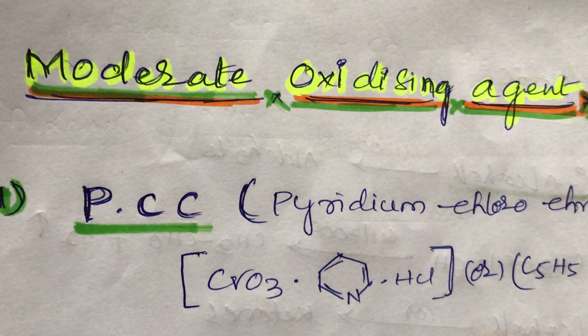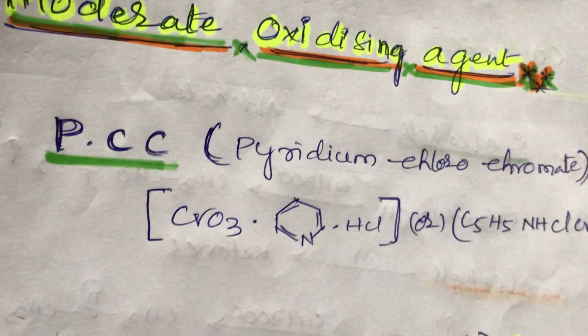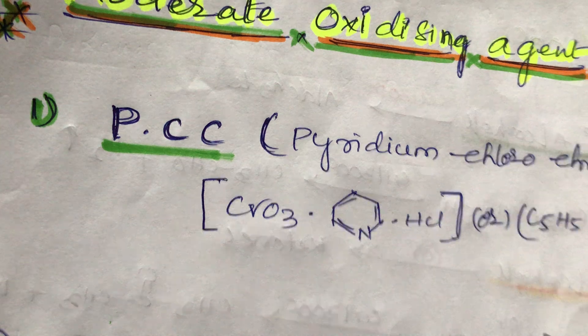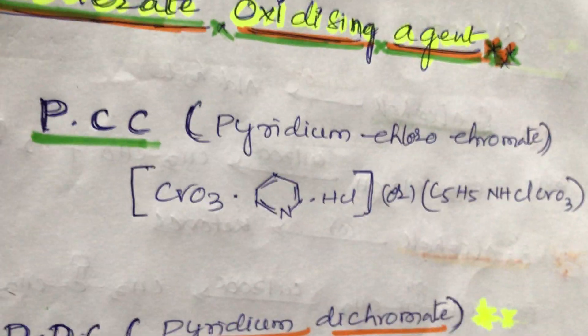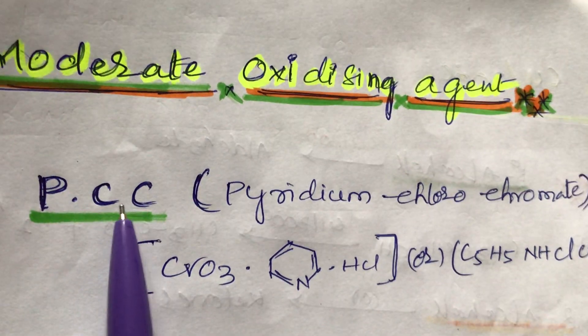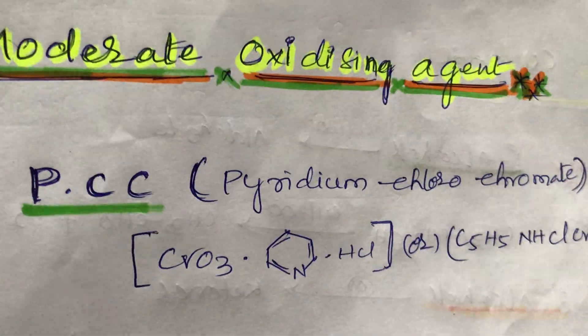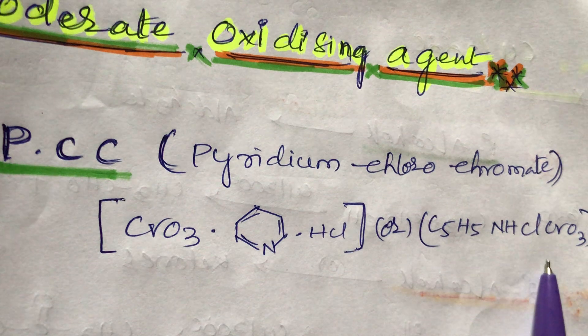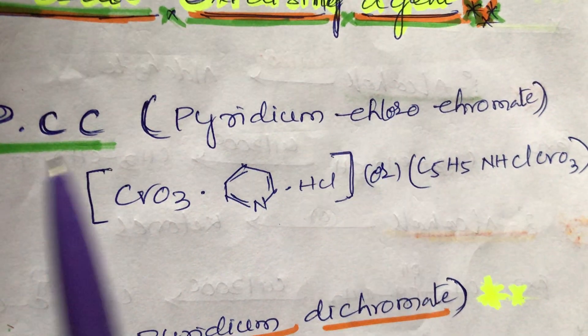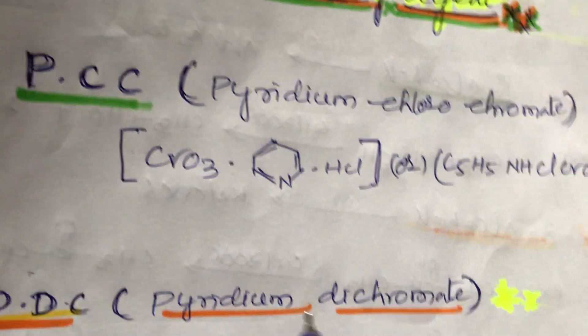The next topic is moderate oxidizing reagents. These are PCC — pyridinium chlorochromate — with the formula C5H5N·HCrO3Cl. PCC and PDC are moderate oxidizing reagents.